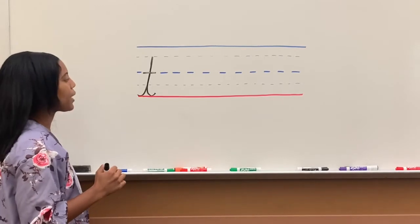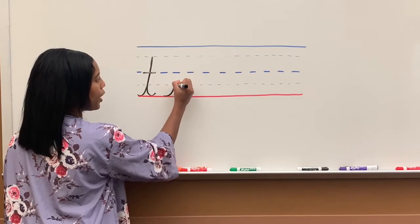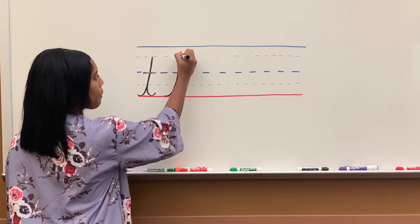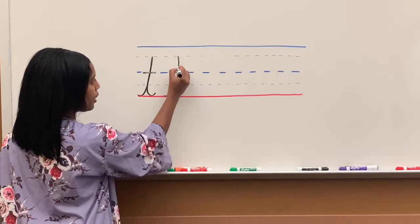We'll go ahead and begin writing T. T starts on the red line. First thing you do is you're going to curve up, and you're going to stop at this line. Again, you're going to curve up, stop here.